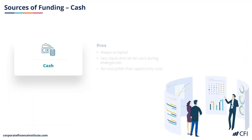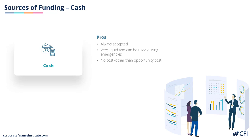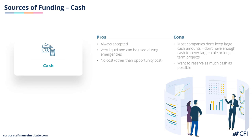Let's take a look at the pros and cons of cash. Cash is always accepted as a source of funding for a project and is very liquid, meaning it can be accessed immediately. There's no cost to using cash the company already has, other than forgoing the opportunity cost of investing it elsewhere. On the flip side, companies generally don't keep very large cash balances available for big projects, and they want to preserve cash in case of emergencies. So it's a balance between keeping enough cash for emergencies but not leaving excessive cash that could be used to fund projects.